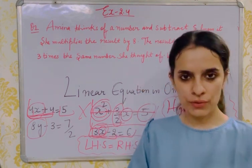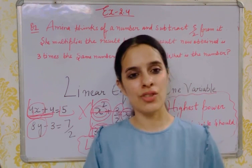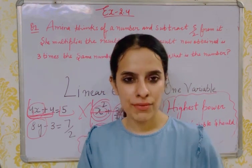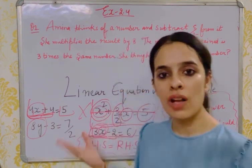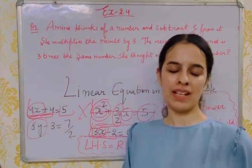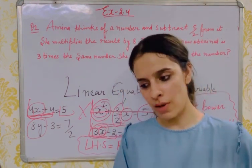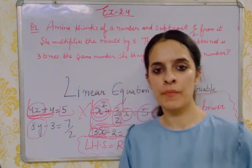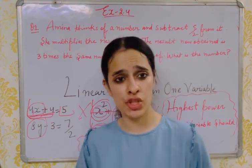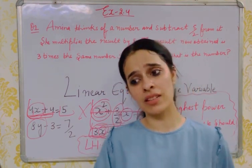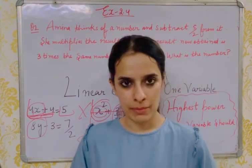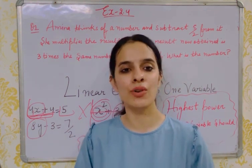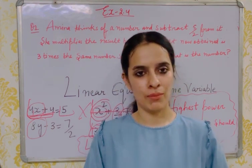In Exercise 2.4, we will be doing comparisons between ages and many daily-life things and solving them. There are only two methods we will use: the transpose method and the hit-and-trial method. We will be solving Exercise 2.4 by following the same procedure.